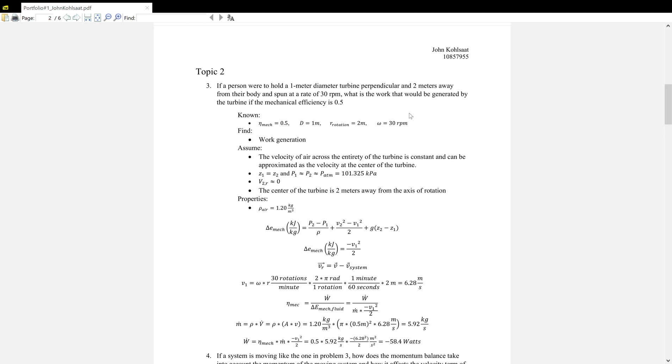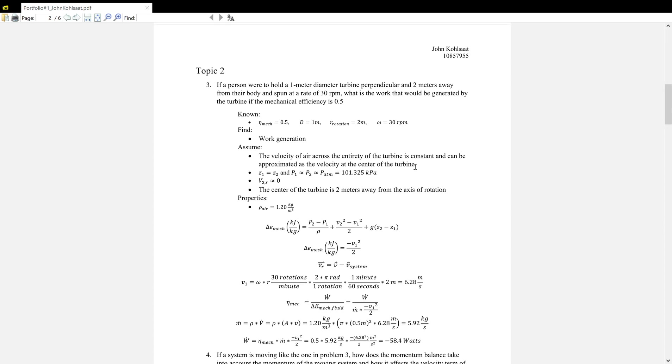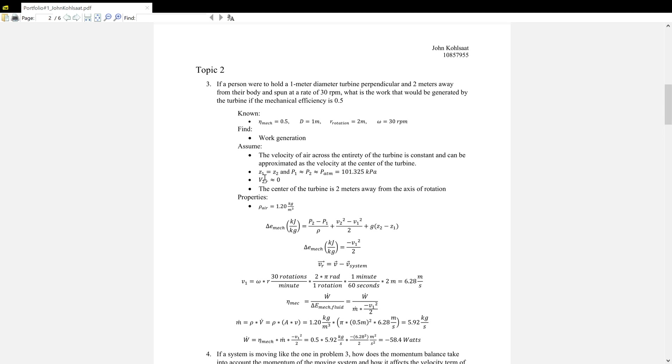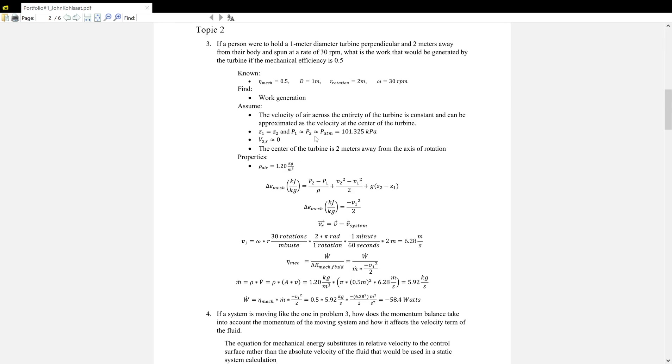This is because the velocity of the air entering the turbine on the outside is actually faster than the velocity entering on the inside due to having a higher radius of rotation. But we can assume that it's equal to the velocity at the center and approximate it that way. Z1 equals Z2 due to it being perpendicular. And P1 equals P2 equals P_ATM because this is all happening basically outside at atmospheric pressure. Then we can find V2 relative is actually about equal to zero. So we're assuming that the turbine basically takes all energy from the air that enters, or all velocity at least. The center of the turbine is two meters away from the axis of rotation, which is given in the problem.